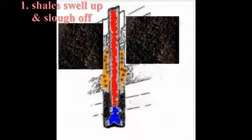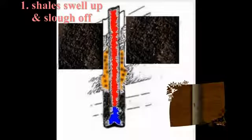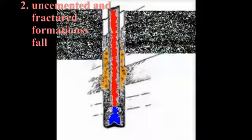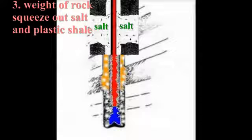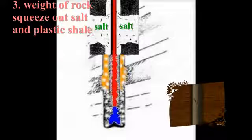First, absorbing the mud filtrate, some shales swell up and slough off their outer layers into the well. Second, large quantities of material from uncemented or fractured formations fall into the hole. Third, the weight of the overlying rock force or squeeze out salt and water or plastic shale formations into the wellbore.